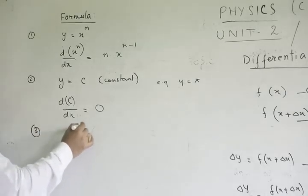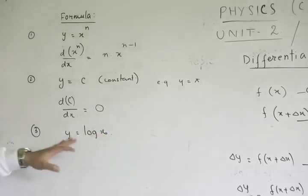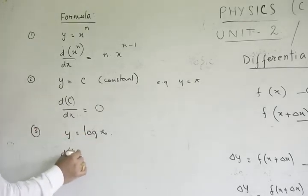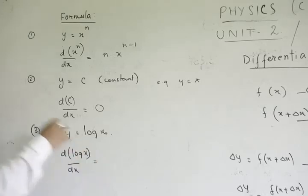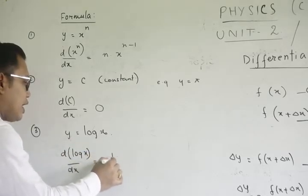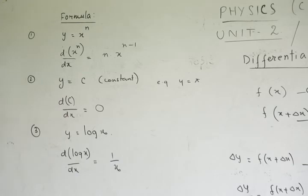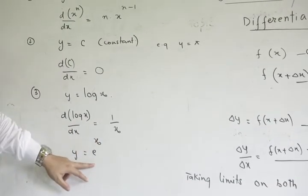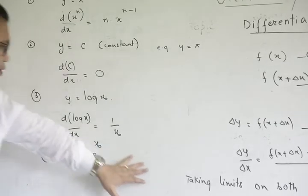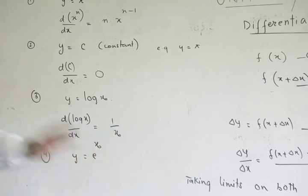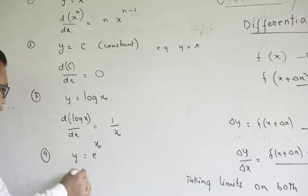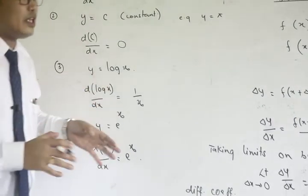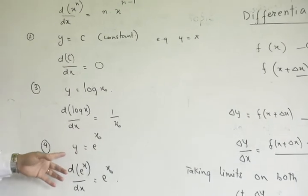Number 3: y is equal to log of x. The derivative of the logarithmic function is the reciprocal of x, that is 1 by x. Number 4: suppose y is equal to e to the power x — the exponential function. The derivative of the exponential function with respect to x is the exponential function itself.